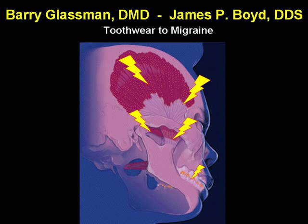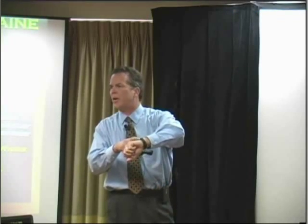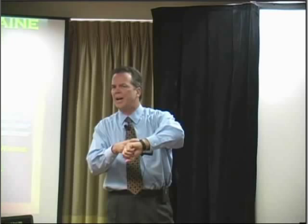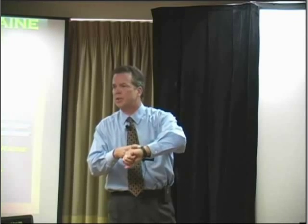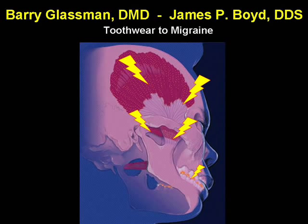At some point the lateral pterygoid would say, I'm really supposed to separate these teeth — it's been over 0.2 seconds, and that's what we do in function. So it starts to contract and try to advance the condyle, but it can't — the elevator is still busy contracting. Our focus in the world is right there at the collision site.